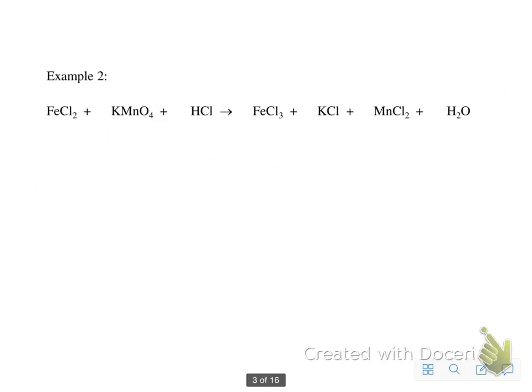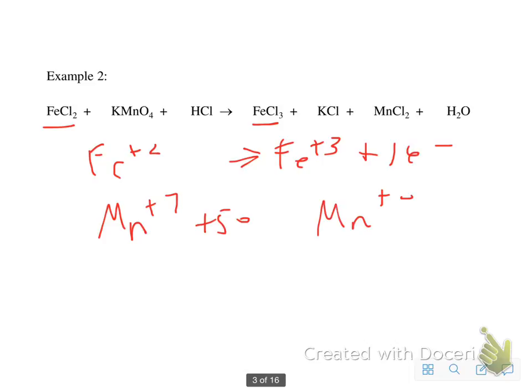Let's take a look at the second one. I have FeCl2 and FeCl3. So certainly Fe has changed from a plus 2 to a plus 3. So I need 1 electron here. And I suspect the manganese again. And here we are at plus 7 and manganese plus 2. So I need 5 electrons here. So manganese has been reduced. Iron has been oxidized.